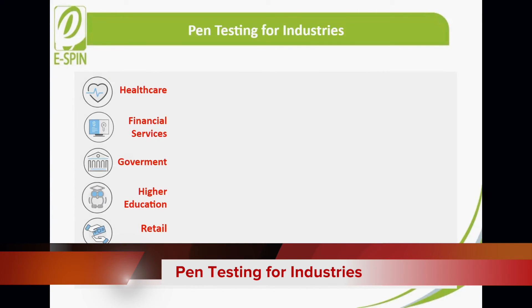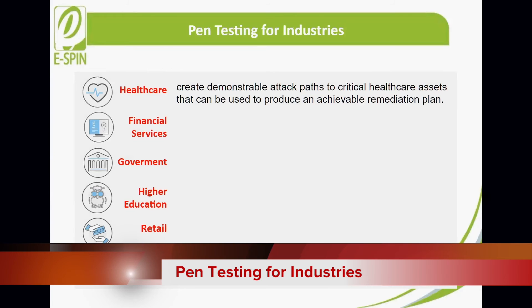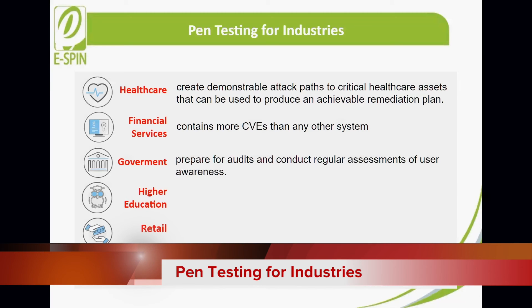Plan testing for each industry, which has its own considerations, processes, and compliance requirements. Whatever industry you are in, Core Impact works to find vulnerabilities before attackers can exploit them. Here's a sampling. Correlate non-exploited attack patterns, network, and security data with identified vulnerabilities to create demonstrable attack paths to critical healthcare assets that can be used to produce an achievable remediation plan. In addition, for financial services, Core Impact contains more CVEs than any other system, making sure you are covering the most vulnerabilities with each test. With national security at risk and regulations like FISMA requiring stringent controls, Core Impact can help prepare for audits and conduct regular assessments of user awareness.